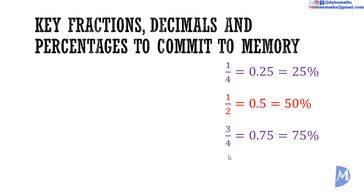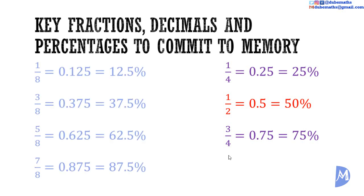Splitting the quarters into two gives eighths. These values are halfway between the values of the quarters. Three eighths, for example, is halfway between a quarter and a half — thus halfway between 0.25 and 0.5, which is 0.375 or 37.5%.